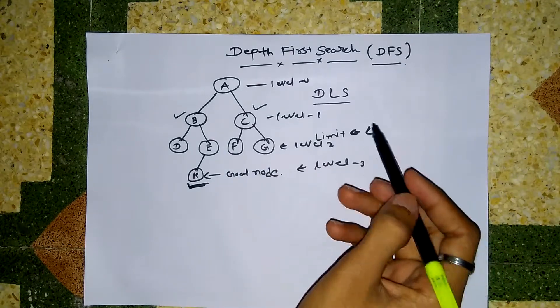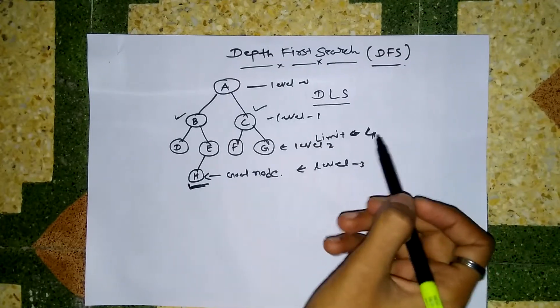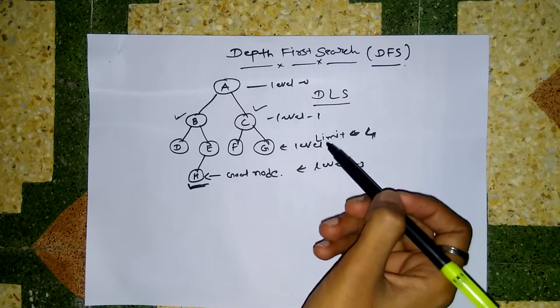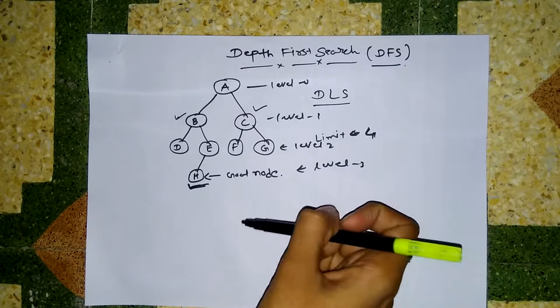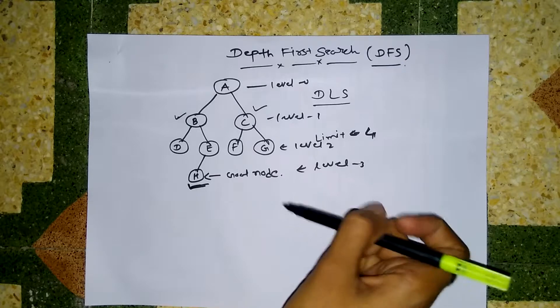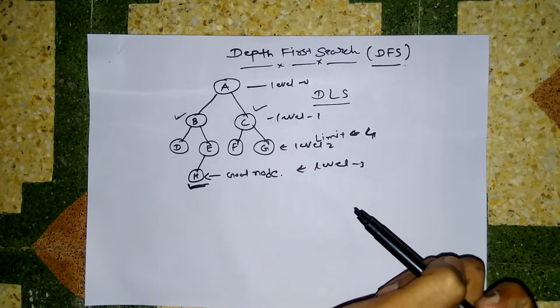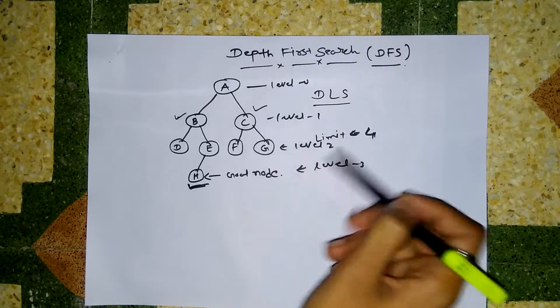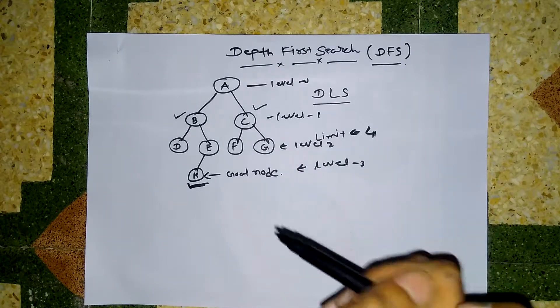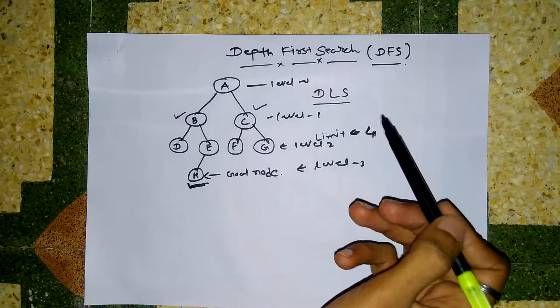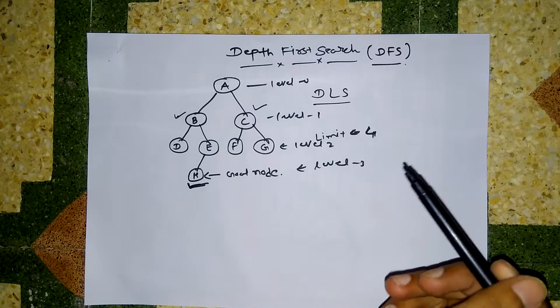But here also there is one disadvantage for DLS. If our goal node is at level 5 and the limit is 4, then we didn't get our goal node. That is the disadvantage of DLS.